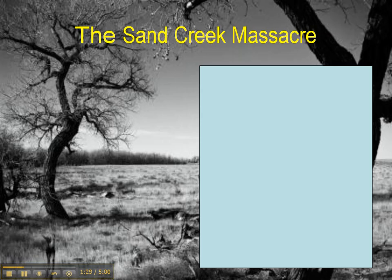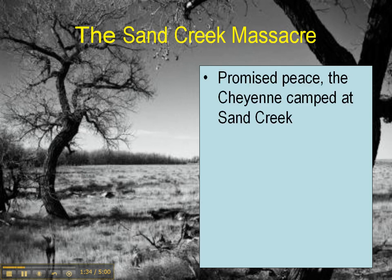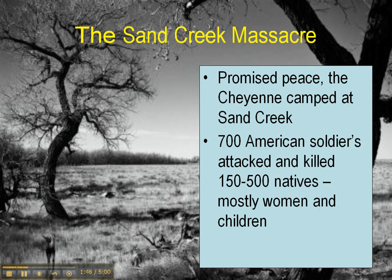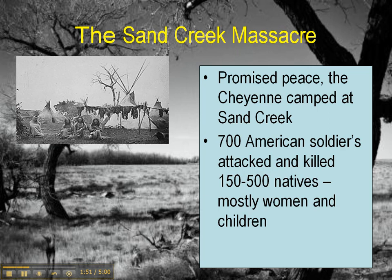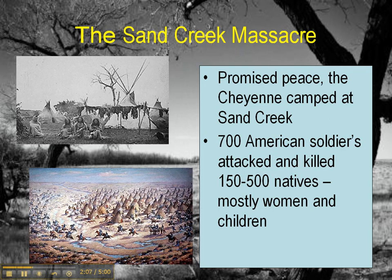One of the most infamous skirmishes between American troops and Indians is the Sand Creek Massacre. The Cheyenne, who were relatively peaceful, were camping at a place called Sand Creek. They had been promised the U.S. government would leave them alone if they stayed within a certain area, and they were doing that. One morning, about 700 American soldiers rolled into the camp and attacked, killing about 150 to 500 natives. Most of the men were out hunting, so the victims were mostly women and children. This is an artist's depiction of what it looked like when the army rolled into their camp.